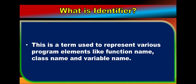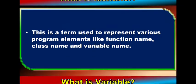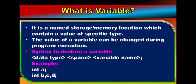Next, what is an identifier? It is a common name used for naming a class, naming a method, naming a variable, naming a constant, etc. What is a variable? Basically, a variable is a named storage or memory location — one memory location to which we give a name — and that memory location can contain a value of a specific type.